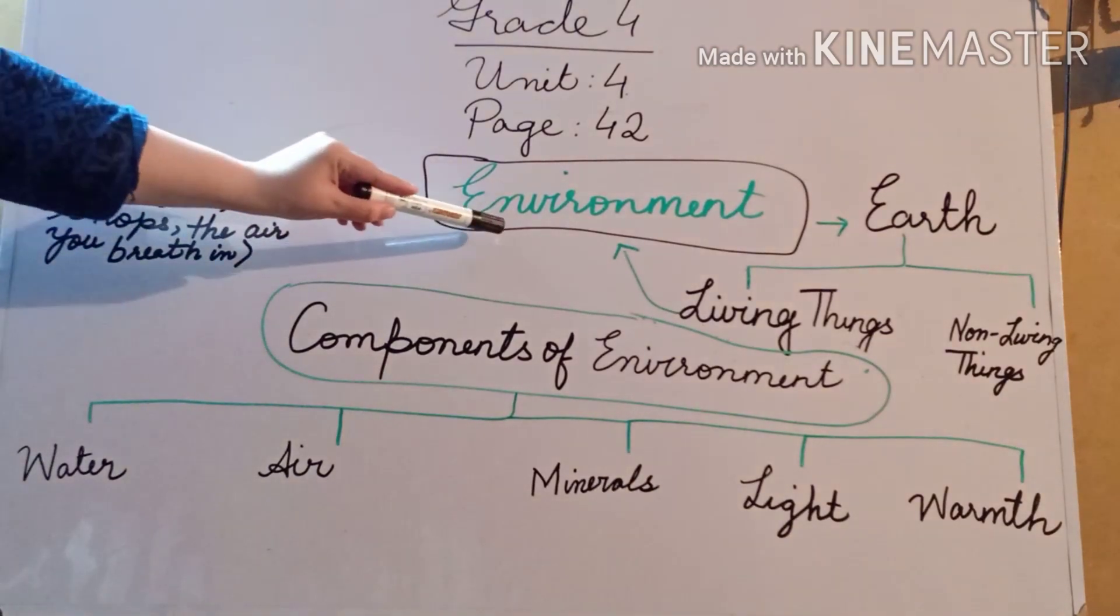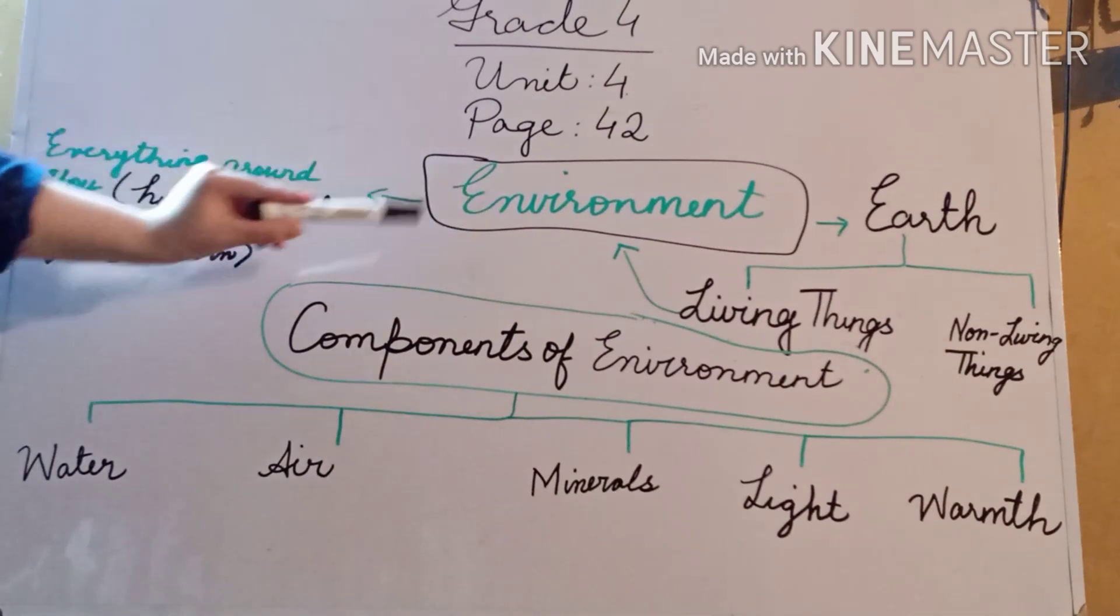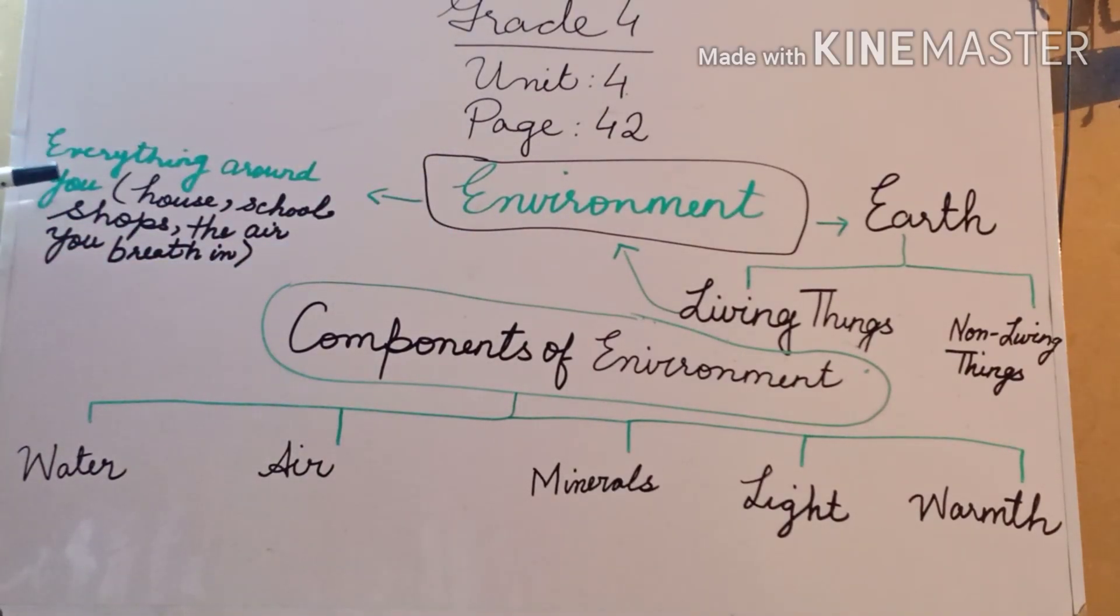First of all, we are going to talk about environment. What is environment? I am going to tell you the definition of environment. Environment is everything around you. It can be your house, it can be your school, it can be the shops around you, or even the air you breathe in.